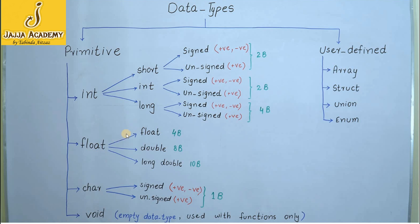The float data type is divided into three subcategories depending on the memory they consume. Simple float consumes 4 bytes in memory. If we have larger fractional values that require more than 4 bytes, we use double, which consumes 8 bytes. If a number is too large even for 8 bytes, we use long double, which consumes 10 bytes in memory.